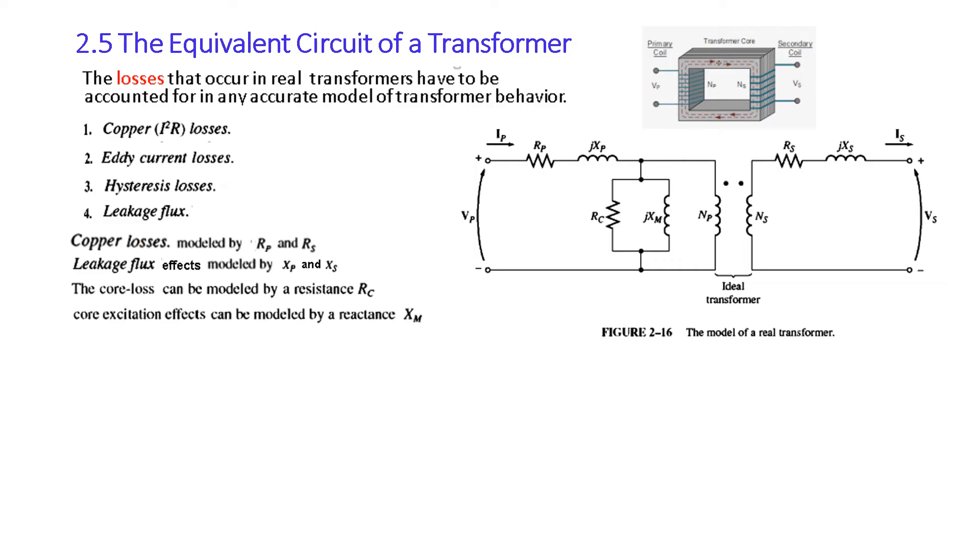Now the copper losses can be modeled by resistance Rp and Rs as I have been shown here. Copper losses are mainly, they generate heat, resistive losses. Then the leakage flux effect can be modeled by Xp and Xs. So these in series are the effect of leakage flux. Then the core loss can be modeled by Rc in parallel. So this is the core loss in parallel. And then core excitation effect can be modeled by Xm. So this is due to the core excitation. So these are the eddy current and hysteresis losses combination.